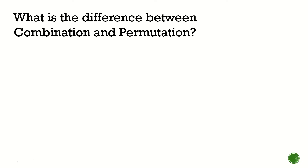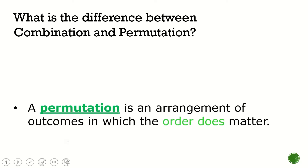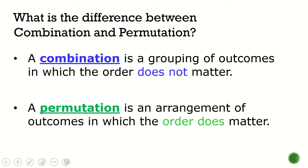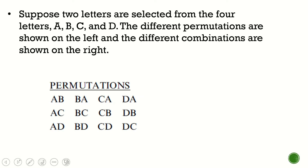Let me give you a clear distinction between these two. When we say permutation, it is an arrangement of outcomes in which the order does matter. On the other hand, combination is a grouping of outcomes in which the order does not matter. Let's say we have letters A, B, C, and D, and the different permutations are shown on the left. We're supposed to select two letters. A, B and B, A in permutations are different — we count them individually.